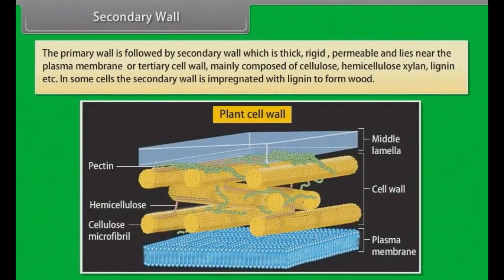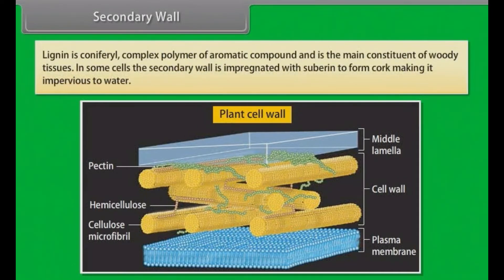Secondary wall. The secondary wall follows the primary wall; it is thick, rigid, permeable, and lies near the plasma membrane. Mainly composed of cellulose, hemicellulose, xylem, and lignin. In some cells, the secondary wall is impregnated with lignin to form wood. Lignin is a complex polymer of aromatic compounds and is the main constituent of woody tissues. In some cells, the secondary wall is impregnated with suberin to form cork, making it impervious to water.